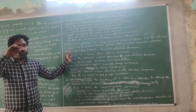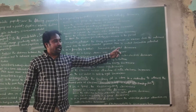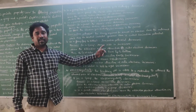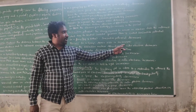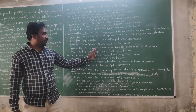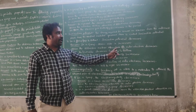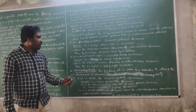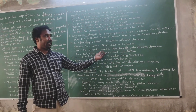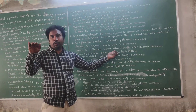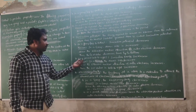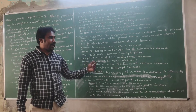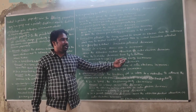In a group, electronegativity decreases. The reason is that electronegativity decreases from top to bottom. In a period, from left to right, electronegativity increases.